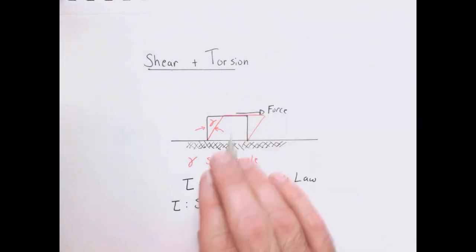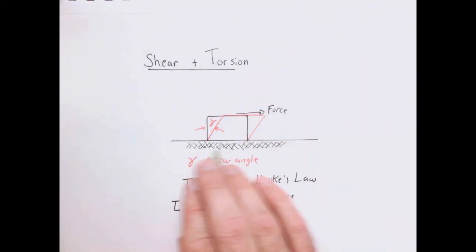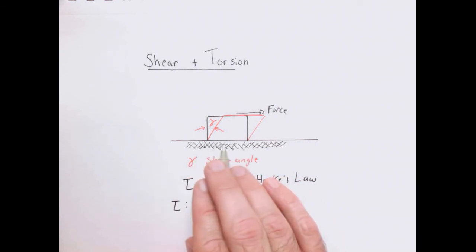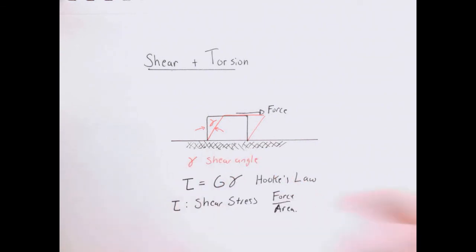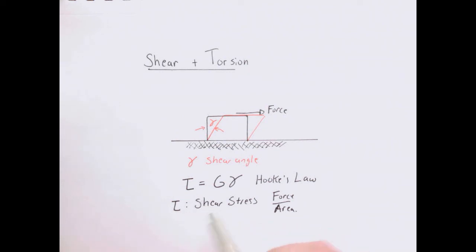When we push on the block, the force is directed normal to the face of the block where it contacts the surface. Whereas in shear, the force is along the surface. In some books and later, we'll often have to group these together because shear and normal stresses are intimately coupled. But typically we use a different symbol to denote their different kinds of stresses.